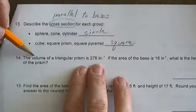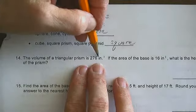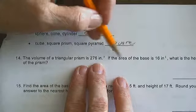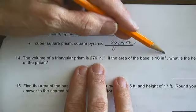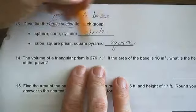The volume of the triangular prism is 276 cubic inches. If the area of the base is 16 square inches, what is the height of the prism?